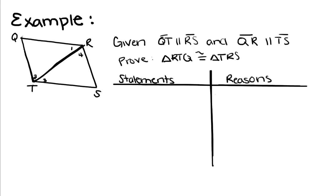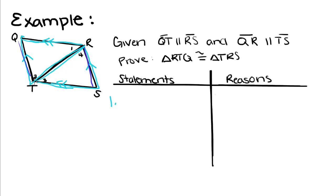Now we're going to do one more practice proof. Given that QT is parallel to RS and QR is parallel to TS, prove that triangle RTQ is congruent to triangle TRS. We're told we have two pairs of parallel lines. If you remember, there is a special kind of angle formed when parallel lines are cut by a transversal. If we look at these two parallel lines first, you can see that they're cut by this transversal TR.